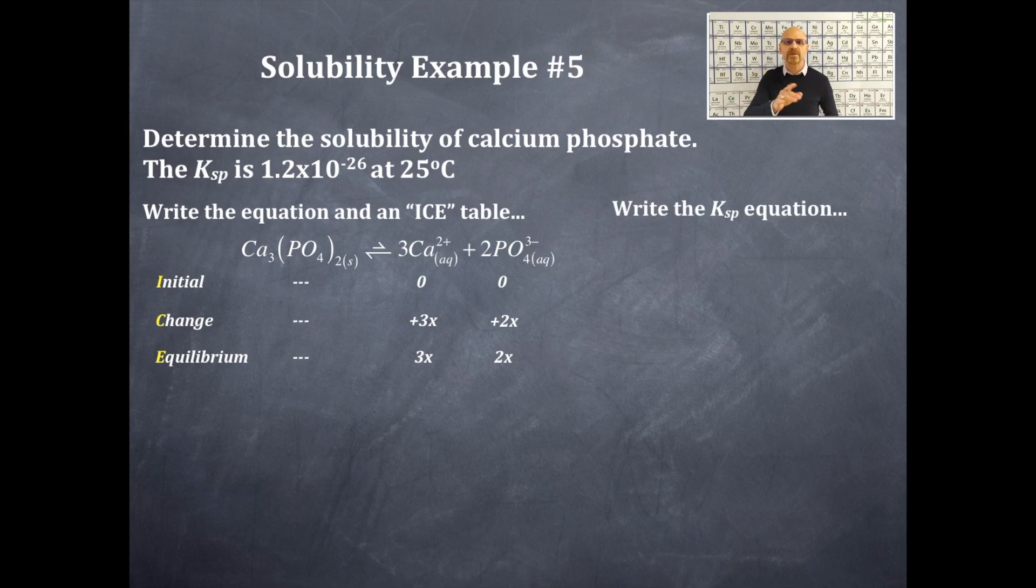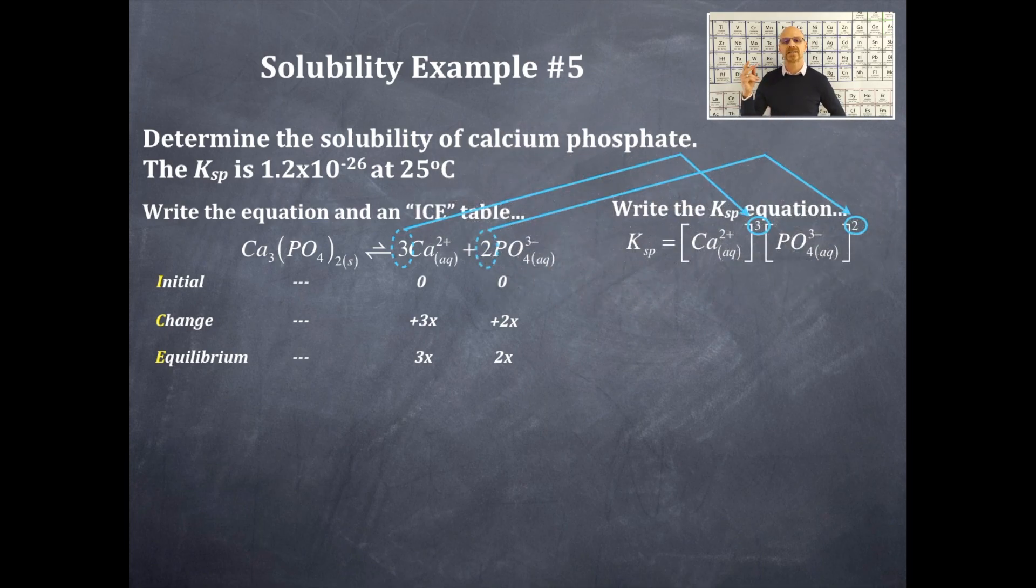Next thing is we're going to write the Ksp value here. Remember K values are products over reactants with the stoichiometric coefficients as exponents. So I got Ksp is equal to the calcium ion 2+ aqueous to the cubed and then phosphate, that's PO4 3- aqueous, squared. So where are these numbers coming from? This three on the calcium ion is coming from that stoichiometric coefficient and this two for the phosphate ion as that exponent is coming from that stoichiometric coefficient as well. So products over reactants with the stoichiometric coefficients as exponents.